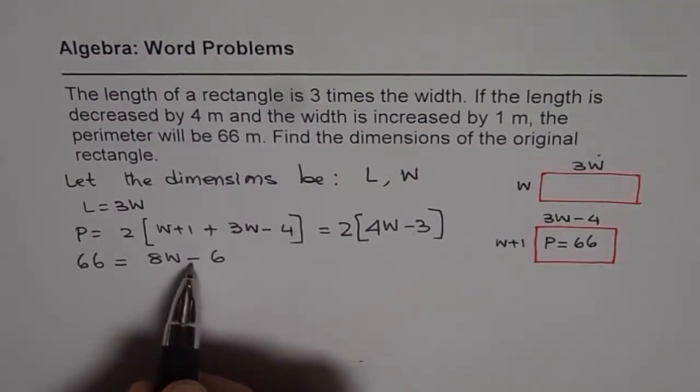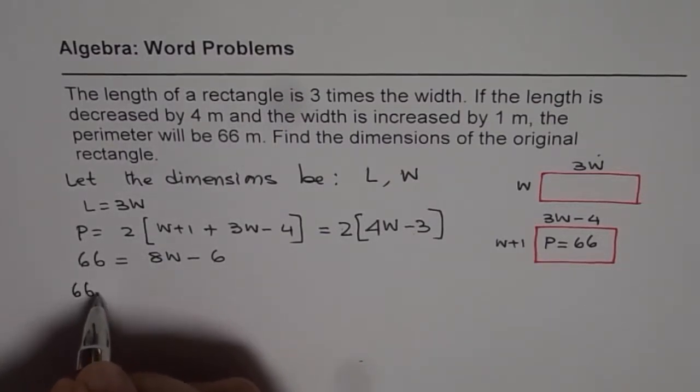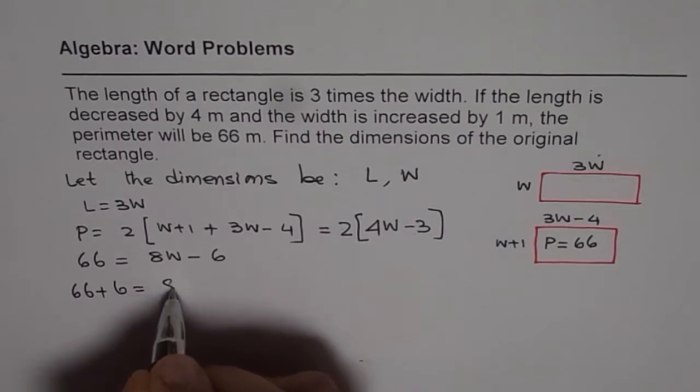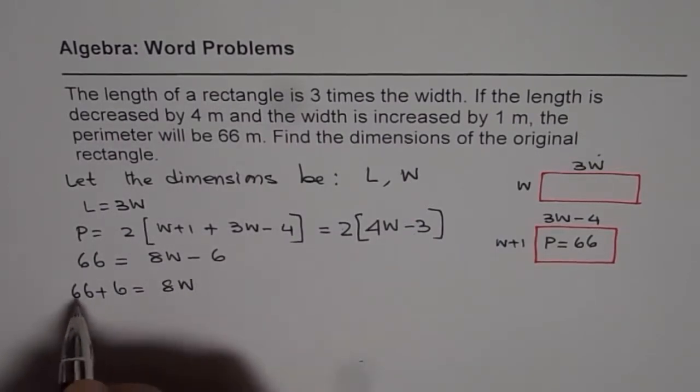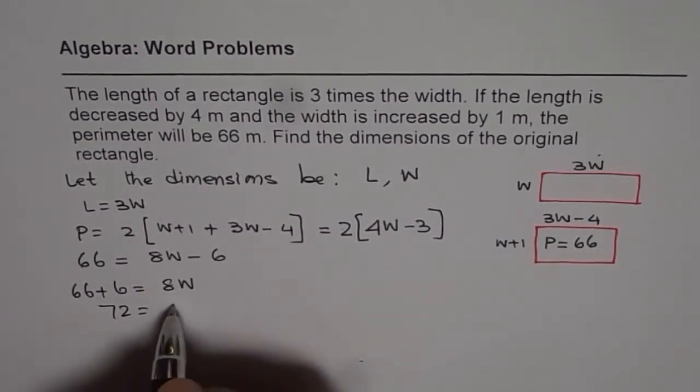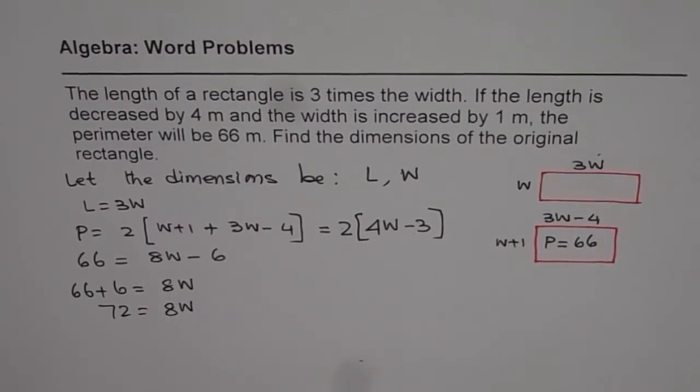We have to get rid of minus six from the left side. Let's add it. So we get 66 plus 6 equals 8W, which is 72 equals 8W.